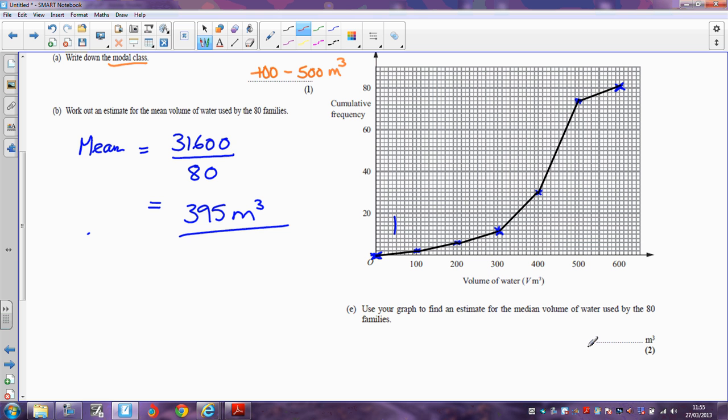So what we need to do is work out the median volume of water used by the 80 families. Now the median is going to be the amount of water used by the halfway family. We've got 80 families, so half of 80 is 40. So we go to halfway up the vertical scale, we go across to our curve, and then we go down from the curve which is there. And we then read off the graph, and I can see from my graph that the median amount of water used is going to be, well there's 400, each little square here is worth 10, so it's going to be about 430, about 430 cubic metres.